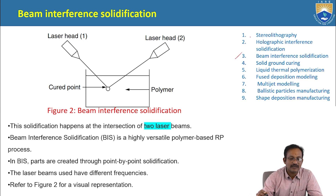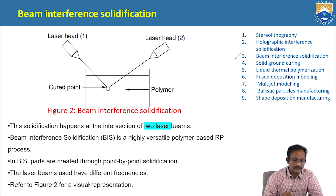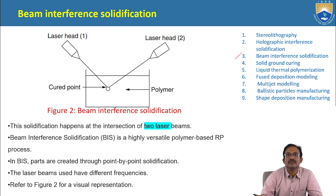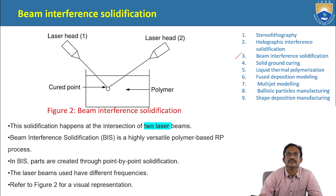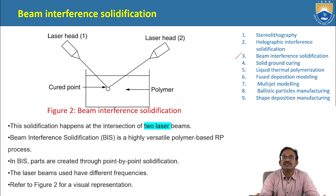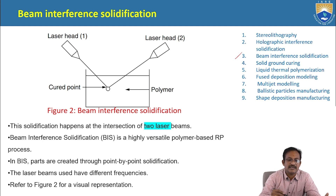Beam Interference Solidification: Looking at figure 2, solidification happens at the intersection of two laser beams — laser head 1 and laser head 2 — with polymer in between. Beam interference solidification is a highly versatile polymer-based rapid prototyping process. In BIS, parts are created through point-by-point solidification. Suppose you want to solidify a point — the laser focuses from head 1, then from head 2, the beams intersect at that point.